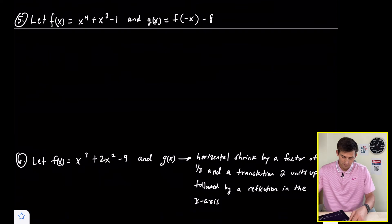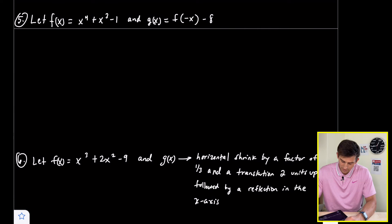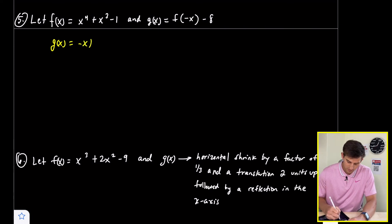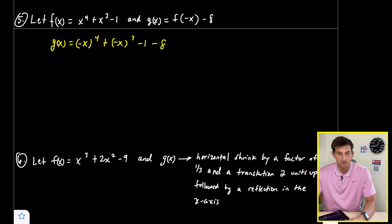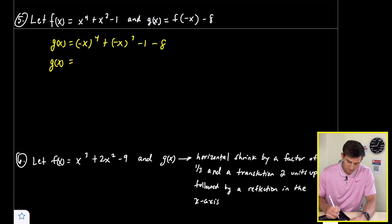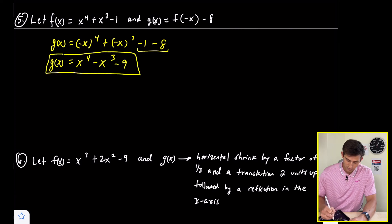Number five: let f of x equal x to the fourth plus x cubed minus one, and g of x equals f of negative x minus eight. Wherever we see x we substitute negative x, giving us negative x to the fourth plus negative x to the third minus one, minus eight. Since negative x to the fourth is still x to the fourth, and negative x cubed is negative x cubed, we get g of x equals x to the fourth minus x cubed minus nine.